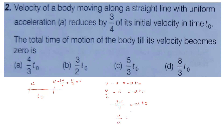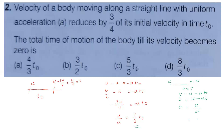From the calculation, A is equal to 4 by 3 T0, and u divided by A equals 4 by 3 T0. So u by A equals 4 by 3 T0.